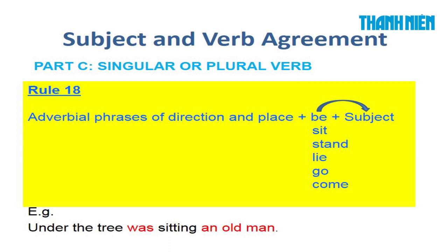Rule number 18: Đây là phần đảo ngữ — khi có những cụm chỉ nơi chốn và phương hướng (adverbial phrases of direction and place) đặt đầu câu, thì đưa nguyên động từ lên trước subject, không dùng trợ động từ. Chỉ dùng được với một số động từ giới hạn: to be, sit, stand, lie, go, come. Ví dụ: 'Under the tree was sitting an old man' — động từ chia theo subject 'an old man'.